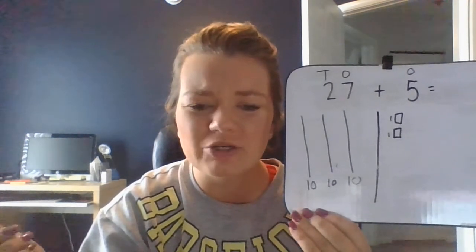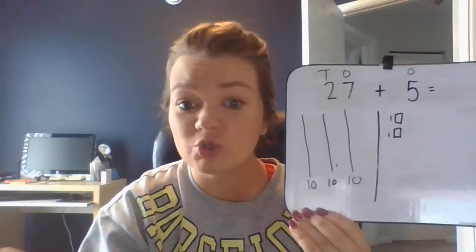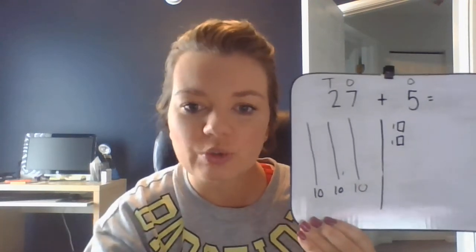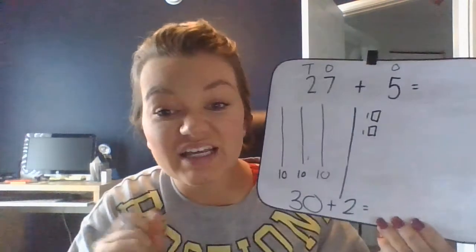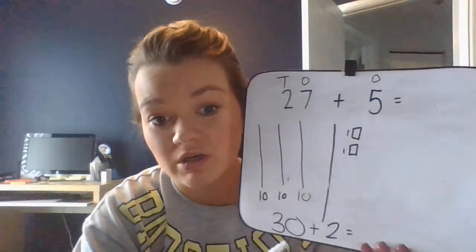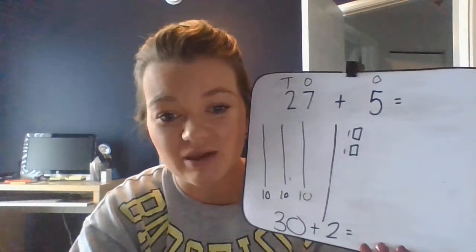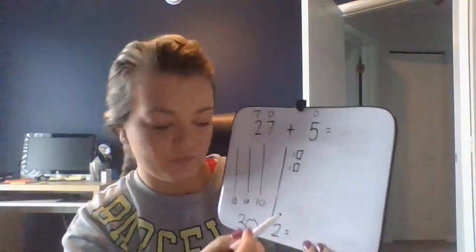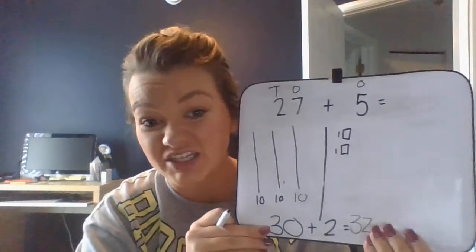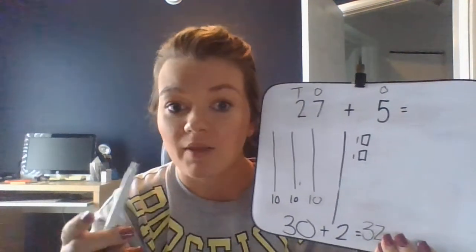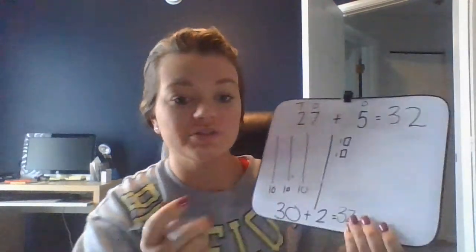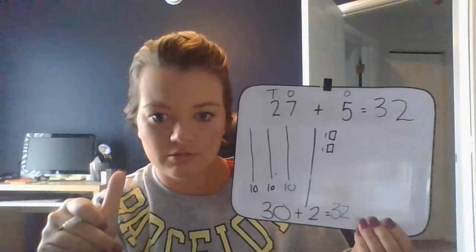Here's my question: what would my new addition number sentence be? Because you no longer see 27 plus 5 — what do you see? Challenge yourself. So does yours match mine? I came up with 30 plus 2, because I have three groups of ten — 10, 20, 30 — and two ones: one, two. So that gives me 32. Now I need to make sure I did this right: is 27 plus 5 still 32? Starting at 27: 28, 29, 30, 31, 32. Both of my sums are the same. Thumbs up if you got 32!